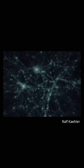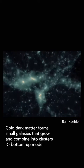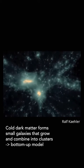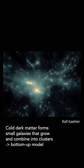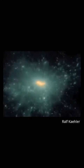Warm dark matter can do that — it just forms fewer dwarf galaxies. Whereas cold dark matter will form a lot of dwarf galaxies and galaxies that then combine to create galaxy clusters.